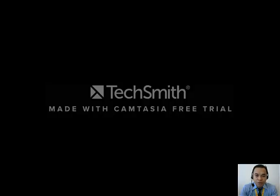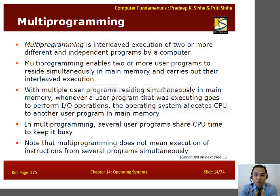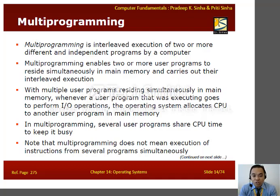We have another term: multiprogramming. 'Multi' means many — two or more programs. Multiprogramming is the interleaved execution of two or more different and independent programs by a computer. Multiprogramming enables two or more user programs to reside simultaneously in main memory and carry out their interleaved execution. Whenever a user program goes to perform I/O operations, the operating system allocates the CPU to another user program in main memory. In multiprogramming, several user programs share CPU time to keep it busy. Note that multiprogramming does not mean simultaneous execution of instructions from several programs.